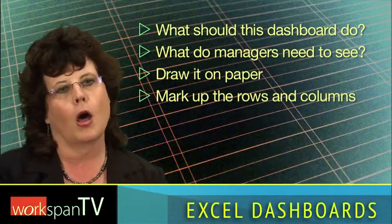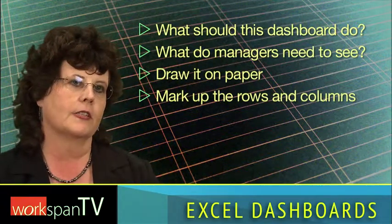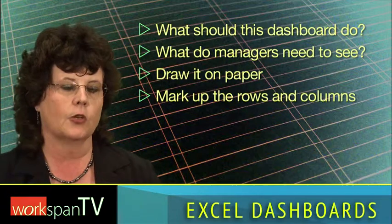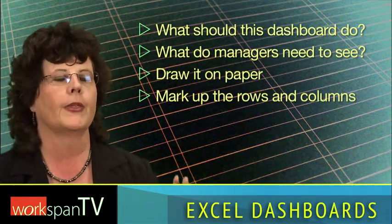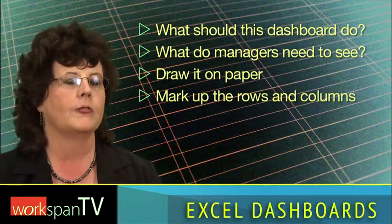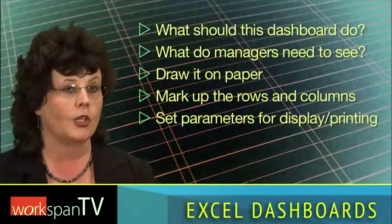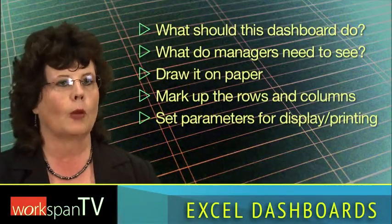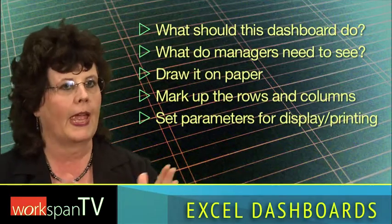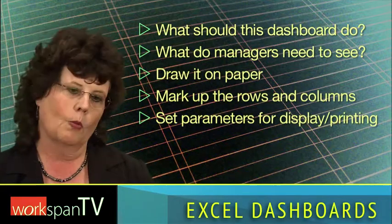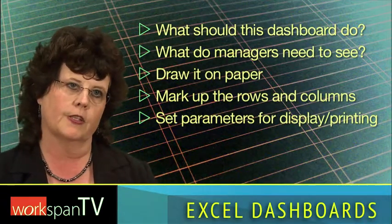Number four is that you mark up the rows and columns — you work out what rows and columns need to be in there. You literally go down to saying this is going to be in this row, this is going to be in this column. Once you've done that, then you go into Excel and decide: do I want this to print to one page — in which case you set the print area for one page and see the space you've got — or do I want it to fit on my screen, in which case you work to your screen size.